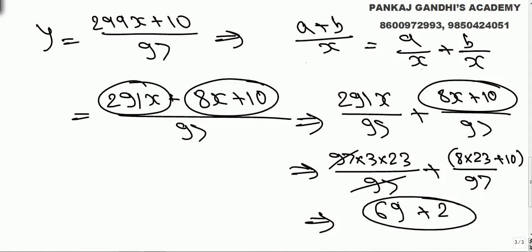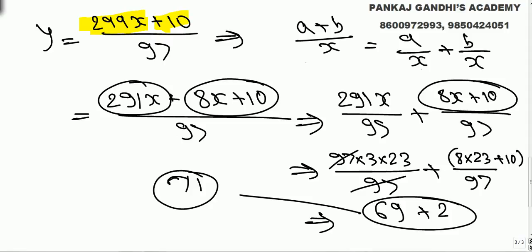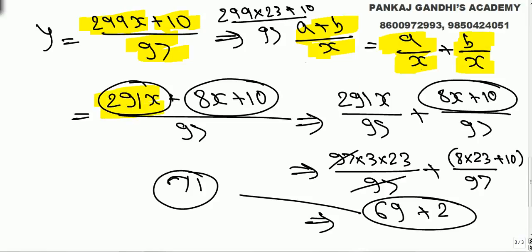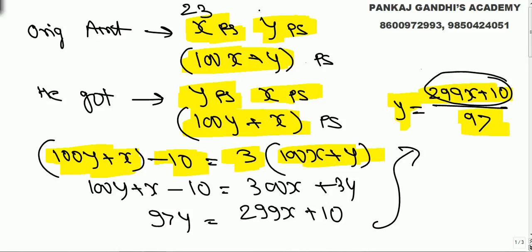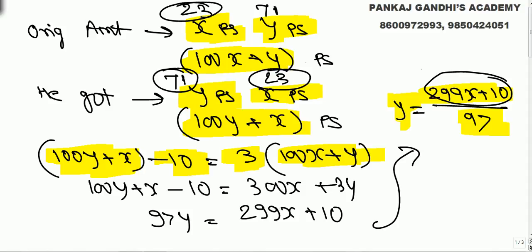So y = 3×23 + 2 = 69 + 2 = 71. We could have directly substituted x = 23 into y = (299×23 + 10)/97, but the breakdown makes calculations easier. Therefore, the original check was of 23 rupees and 71 paise, and the cashier gave him 71 rupees and 23 paise.